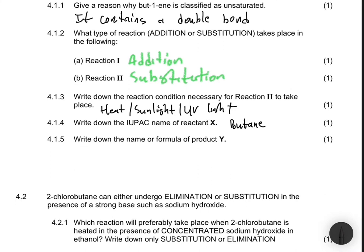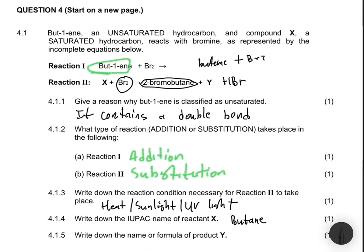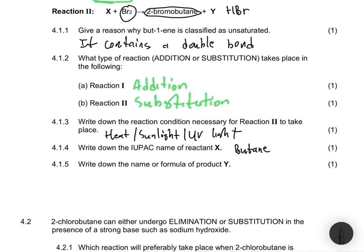4.1.5: Write down the name or formula of product Y. When we have a chemical equation, whatever is on the left must be present on the right. We have butane, and we add bromine, and we get 2-bromobutane. In place of a hydrogen in butane, hydrogen is replaced with bromine. In place of bromine here, we're replacing it with hydrogen. So Y will be hydrogen and bromine. The name or formula of product Y: let's just say HBr, hydrogen bromide.